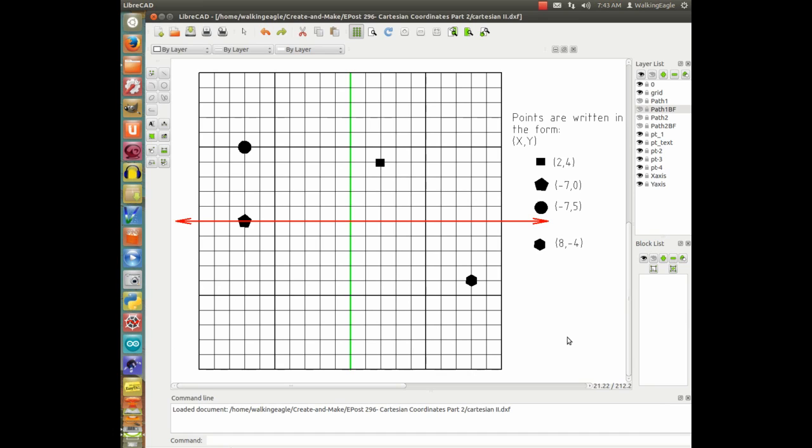Okay, last time we learned how to map points onto this system. Today we're going to learn how to get from one point to another, and that's called a vector.